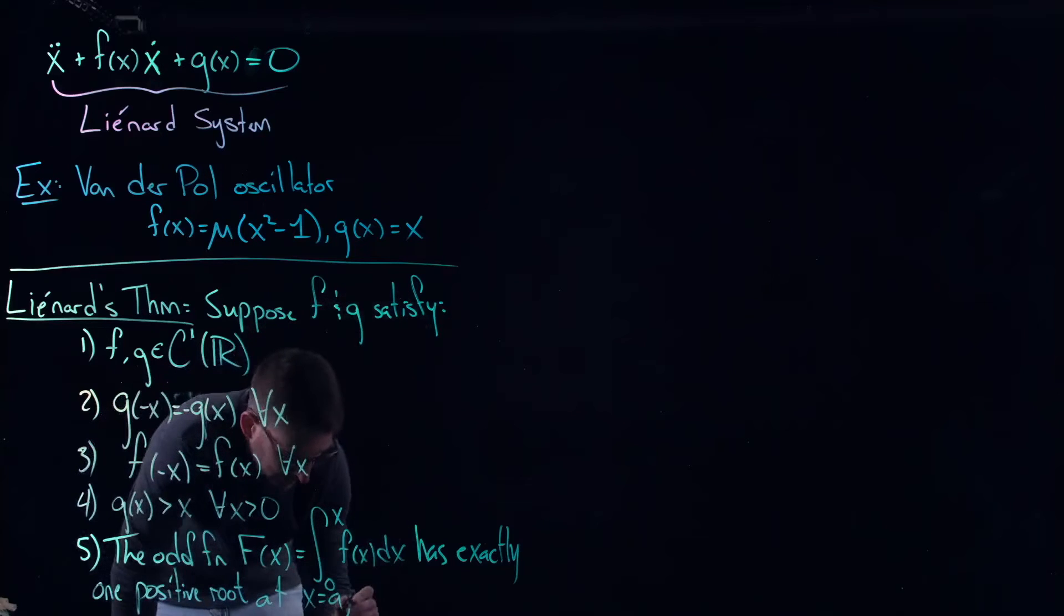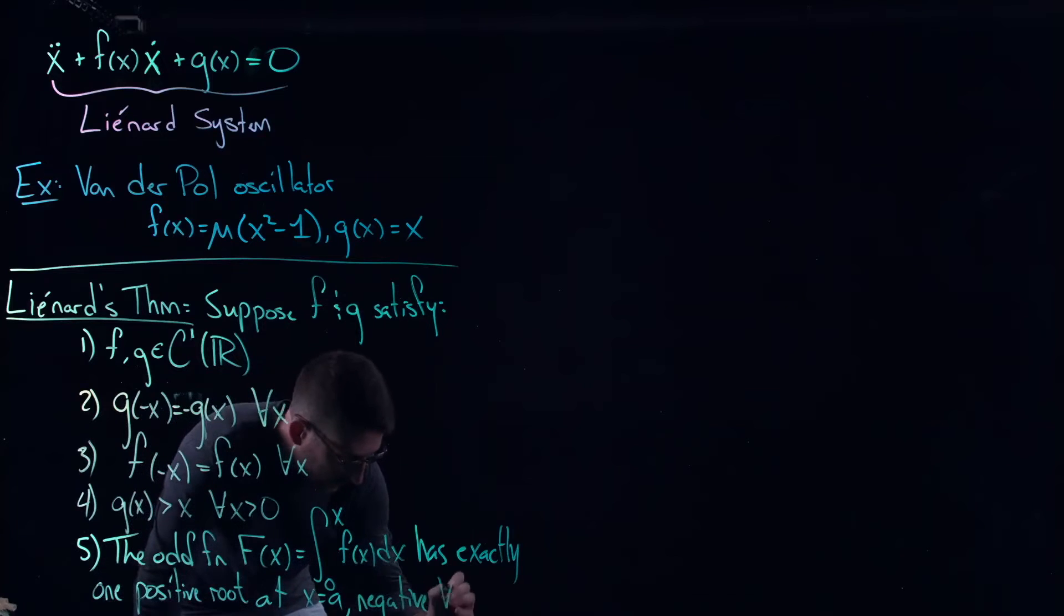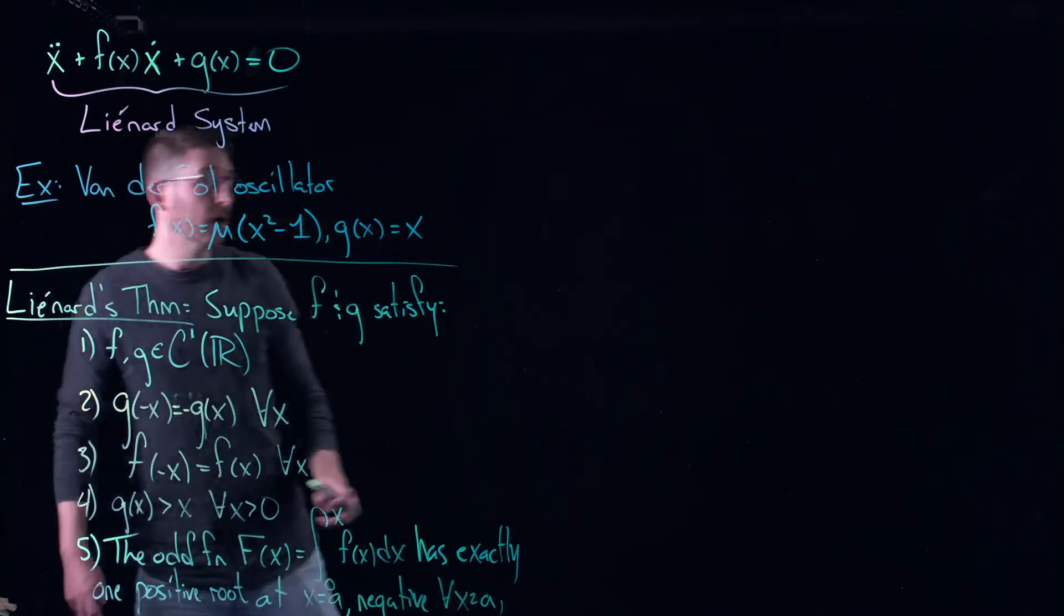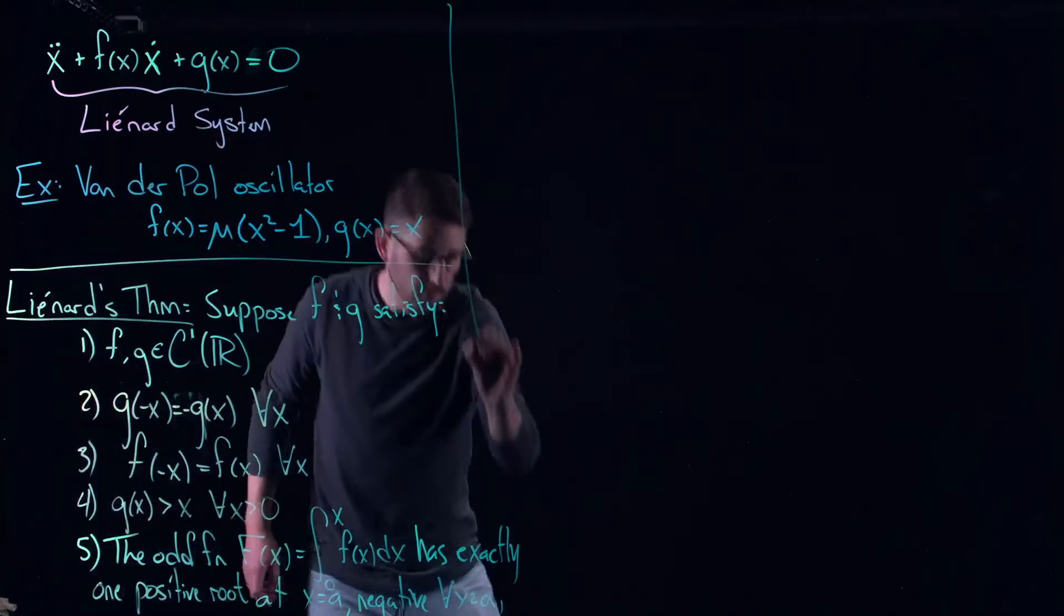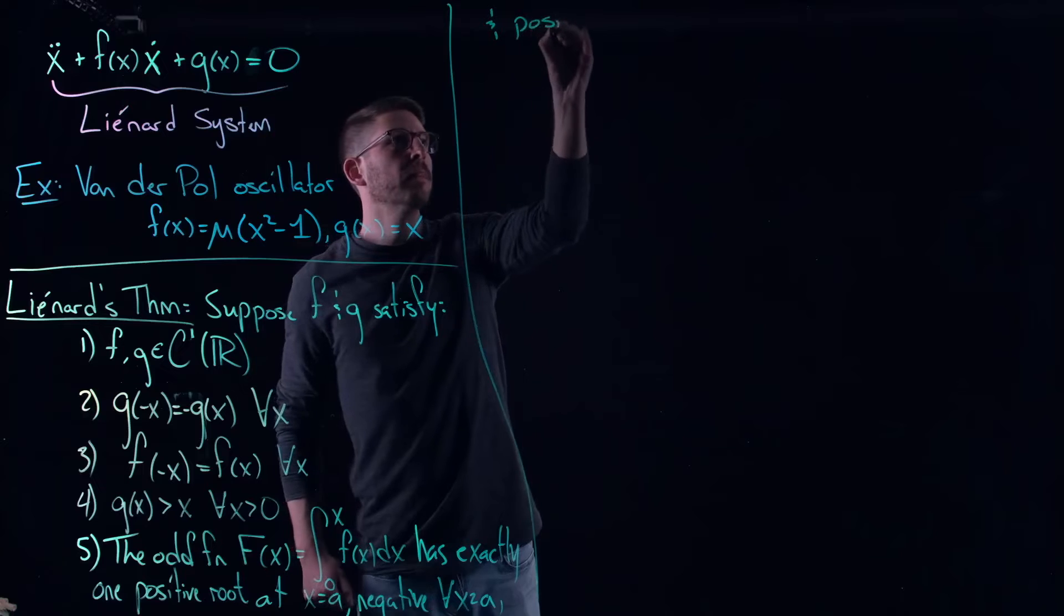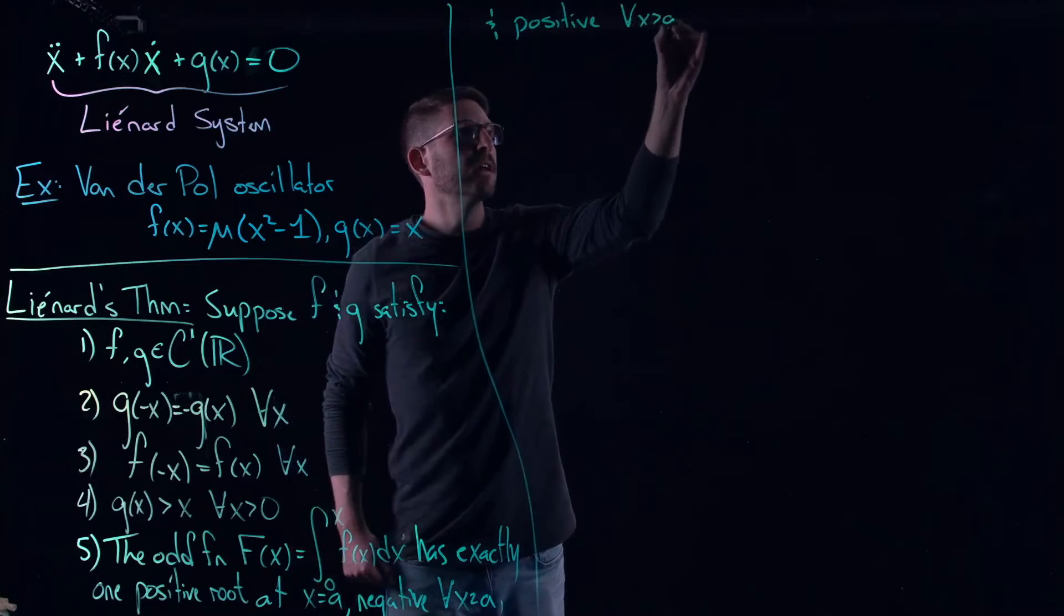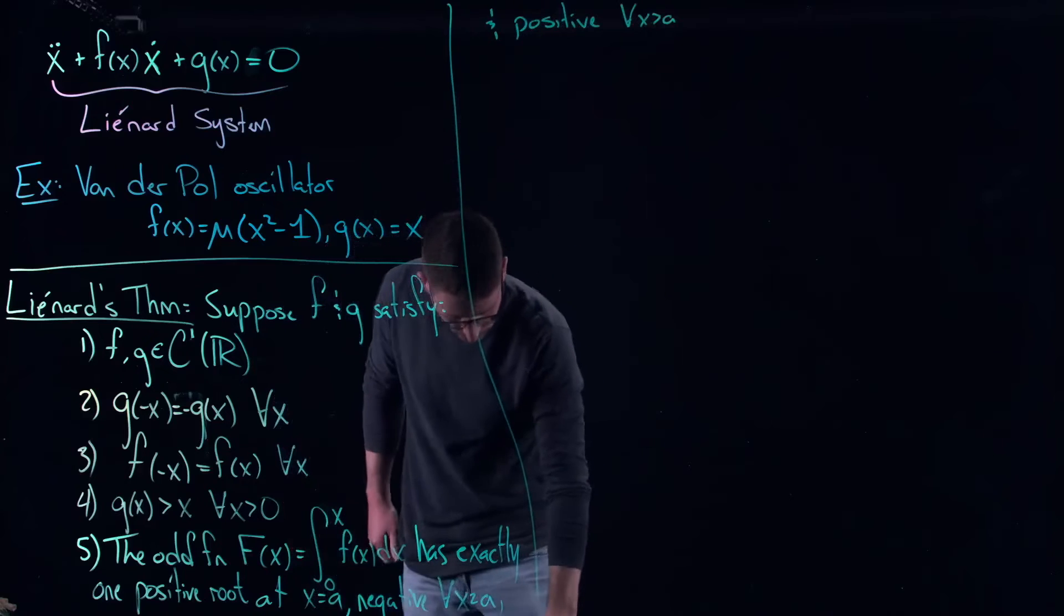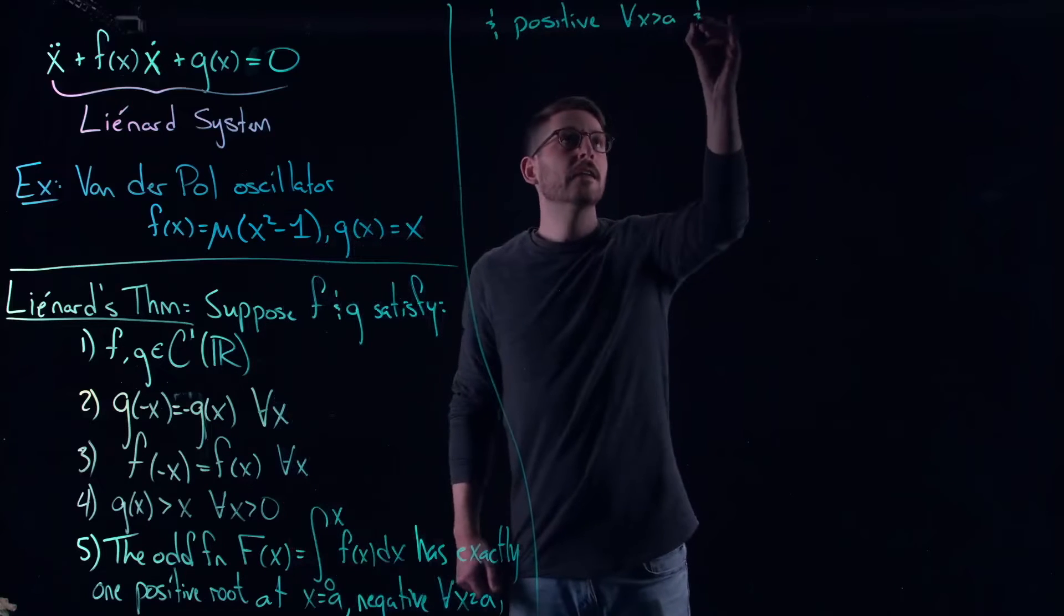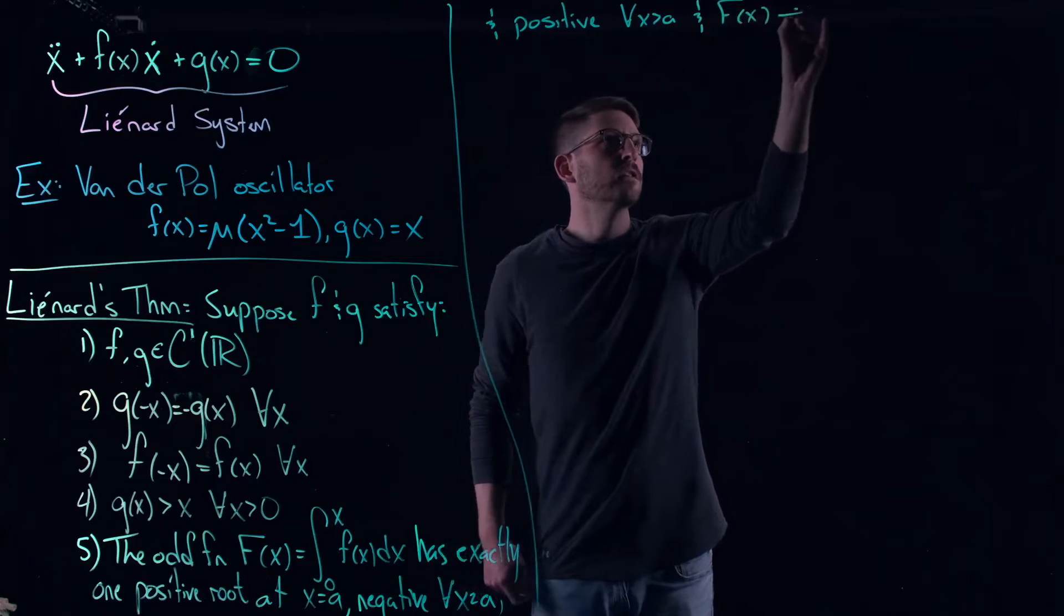And it's negative for all x less than a and positive afterwards. Maybe I'll keep writing up here just so that I don't lose you. And positive for all x bigger than a. And I know I have two ands here but that's okay. F of x goes to infinity as x goes to infinity.